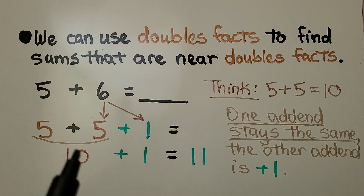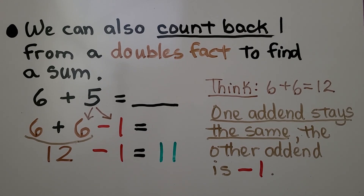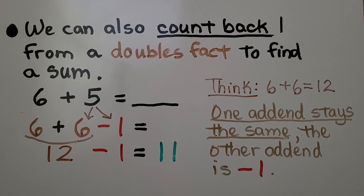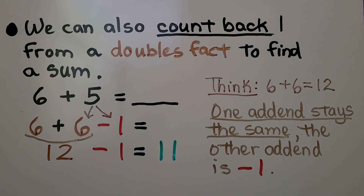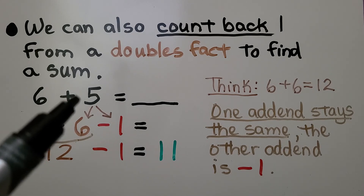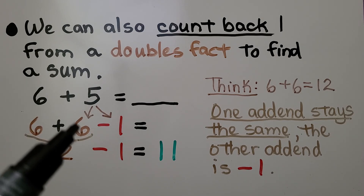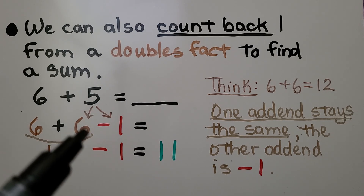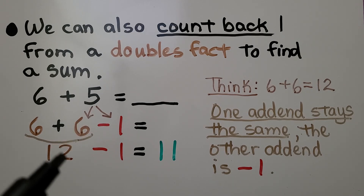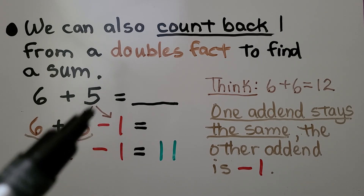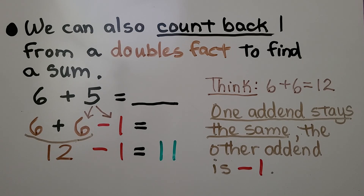We can count on one more from the doubles fact, or we can also count back one from a doubles fact to find a sum. For 6 plus 5, one addend is the same and the other is one less than the doubles fact. 6 plus 6 equals 12, but we take away one because 5 is one less than 6. 12 minus 1 is 11. One addend stays the same; the other addend is minus 1.